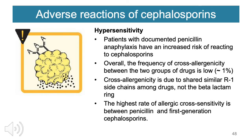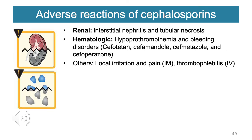Adverse drug reactions of cephalosporins: First, hypersensitivity — patients with documented penicillin allergy or anaphylaxis have an increased chance of reacting with cephalosporins. The frequency of cross-allergenicity is low at 1%, due to shared similar R1 side chains among drugs, not the beta-lactam ring. The highest rate of allergic cross-sensitivity is between penicillin and first-generation cephalosporins. Other adverse reactions include renal interstitial nephritis and tubular necrosis, hematologic hypoprothrombinemia and bleeding disorders (with cefamandole, cefmetazole, and cefoperazone), local irritation and pain with IM administration, and thrombophlebitis via IV.